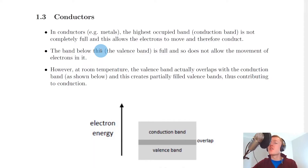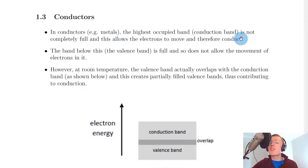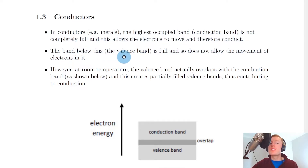We'll start by looking at conductors and how they work in terms of band theory. In conductors, for example metals, the highest occupied band known as the conduction band is not completely full and this allows the electrons to move and therefore conduct. The band below this known as the valence band is full and so does not allow the movement of electrons in it.